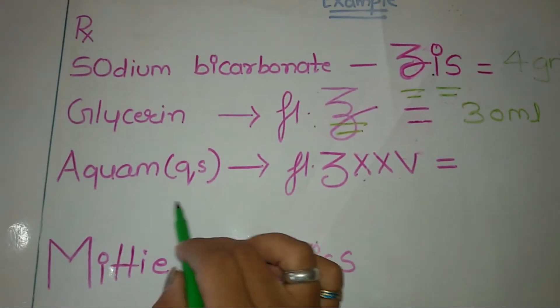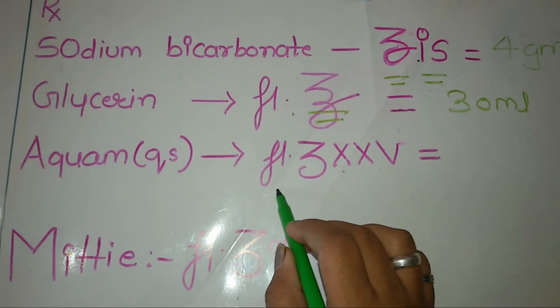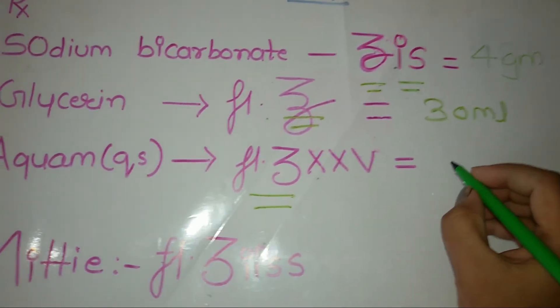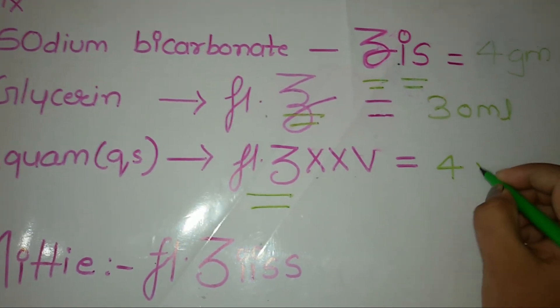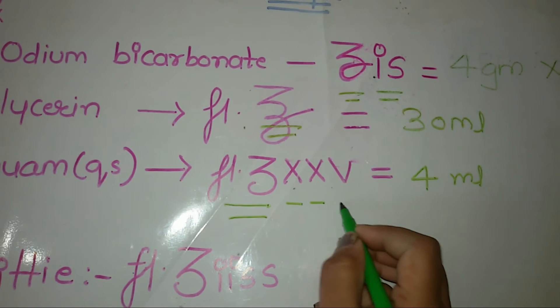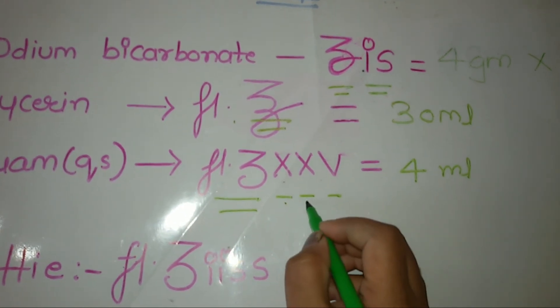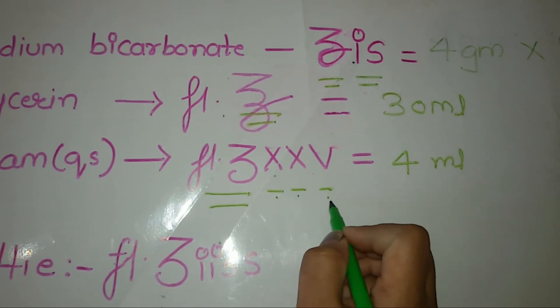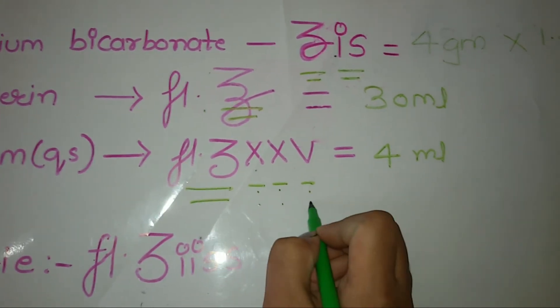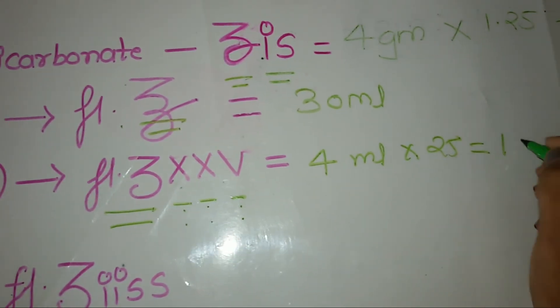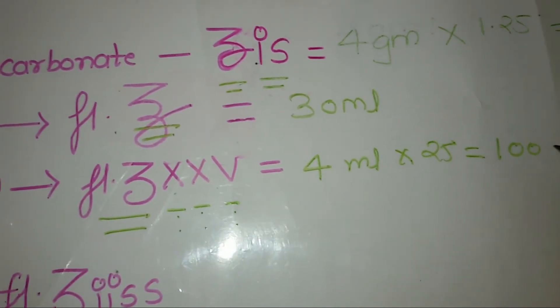Whereas equal water, that is one fluid drachm equals 4 ml. Here water is there, while XXV is 10, 10, and 5, so it is 25. 10 plus 10 plus 5 equals 25. That equals 100 ml.